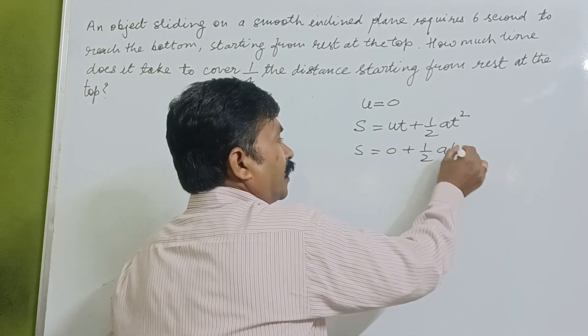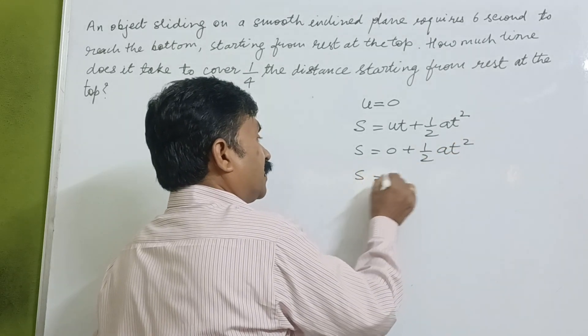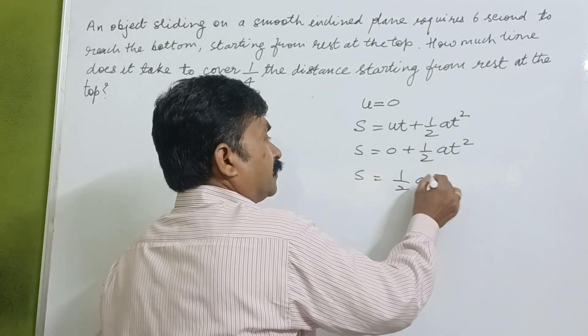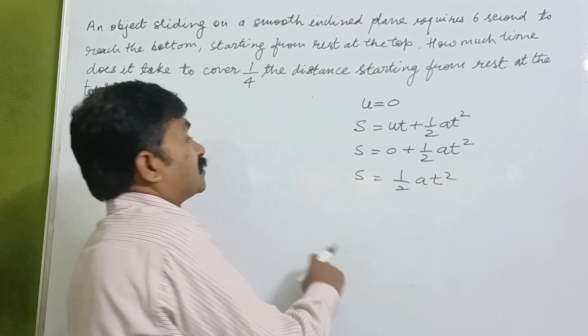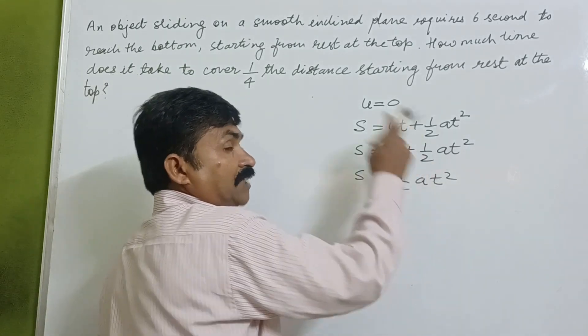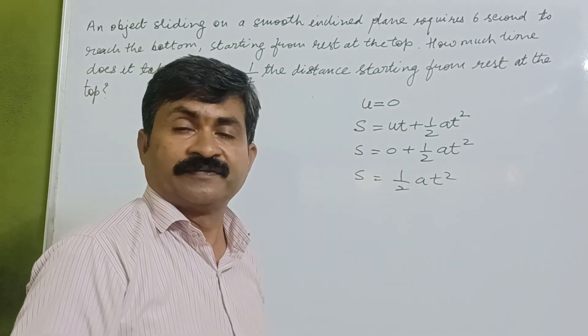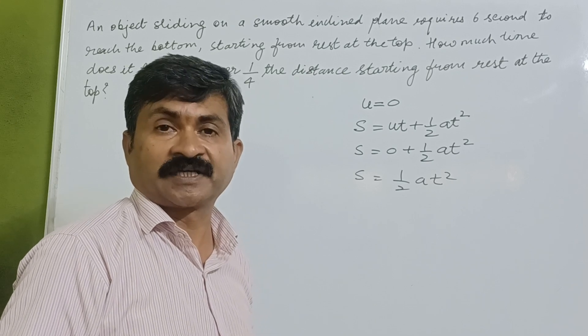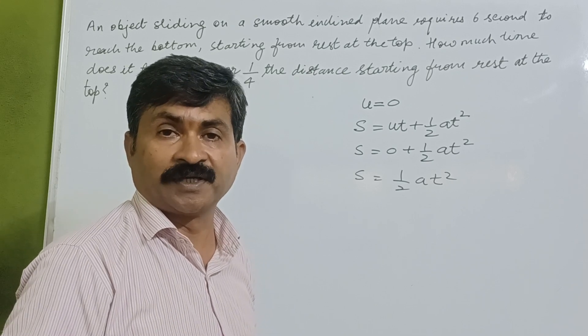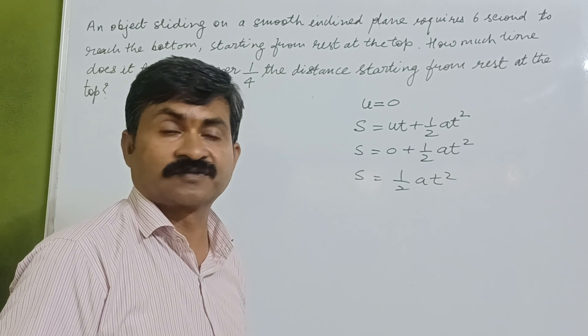If we know the time, we can determine the distance. The value of g we can determine with the help of g which is 9.8 meters per second squared, or if it is given to us, g equals 10 meters per second squared.